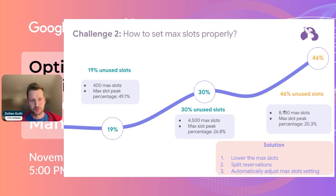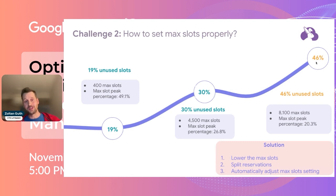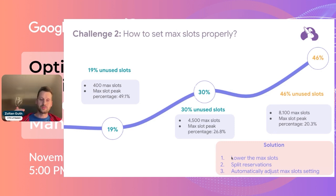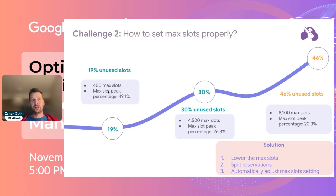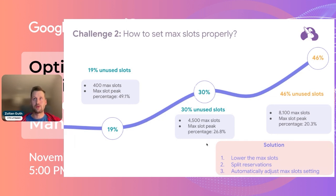What are the solutions to lower this kind of waste? First, you need to understand what your waste is, and then you can think about what to do. The first obvious solution is to lower the maximum slots as much as possible. For instance, in the first example, they are using a really low max slot setting and are peaking quite high on max slot usage.